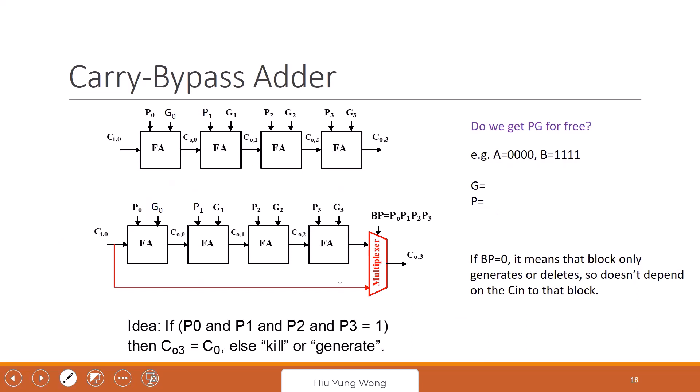Now we go to a more complicated concept called carry bypass. We see that the carry is a big problem — it always takes a long time. Can we compute the carry earlier? And that's where people came up with so-called carry bypass. First of all, we need to generate, instead of AB, something called P and G. P is propagate, G is generate. Do we get it for free? No — extra logic, extra area and power.